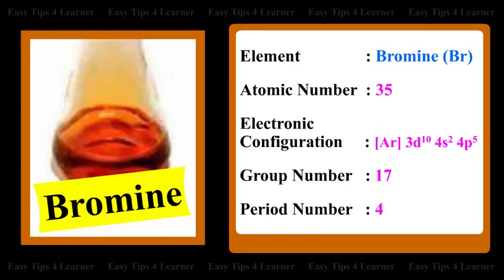For the element Bromine, the atomic number is 35. The electronic configuration is [Ar] 3D10, 4S2, 4P5. The group number is 17 and the period number is 4.